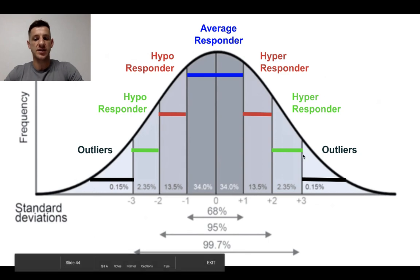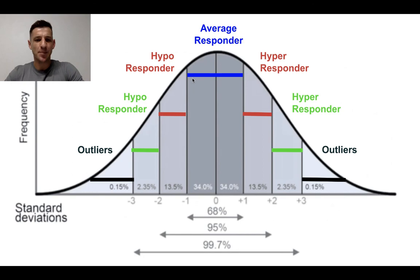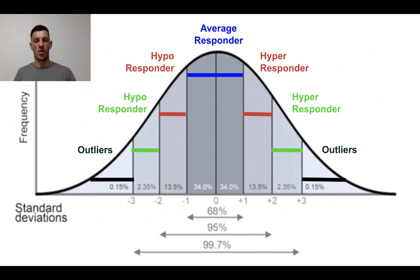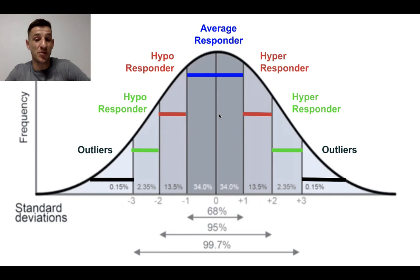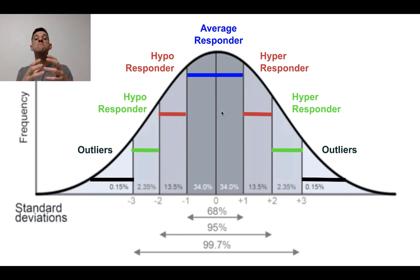This graph illustrates the different types of responders. The blue here represents what we call average responders — you can expect to achieve what is pretty much average over a certain period of time for a particular type of exercise program. This represents about 68% of people, and there's almost no variability between them in the magnitude and rate of adaptation.